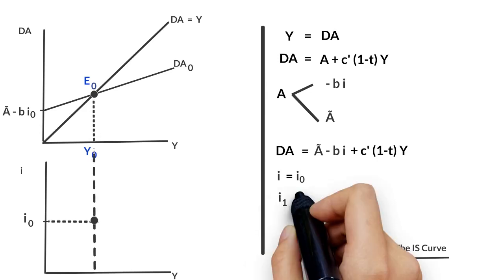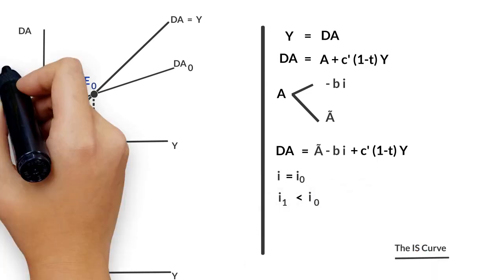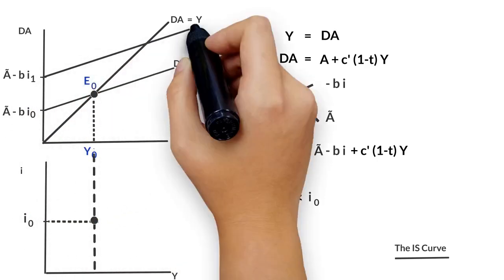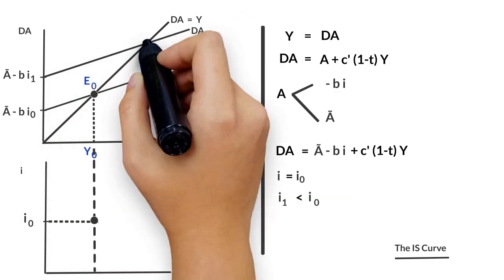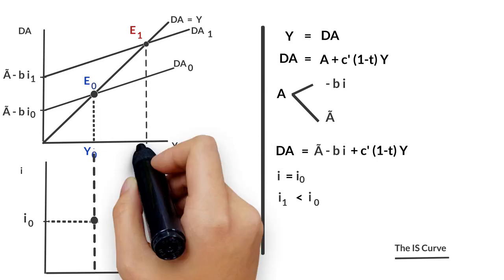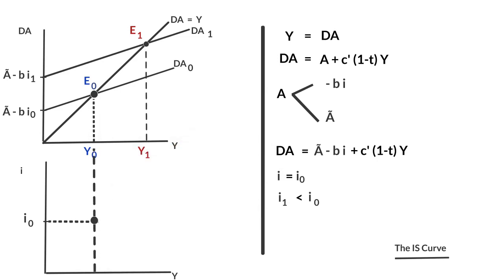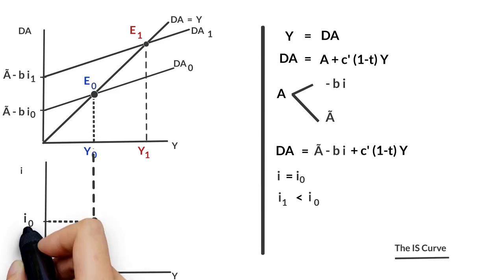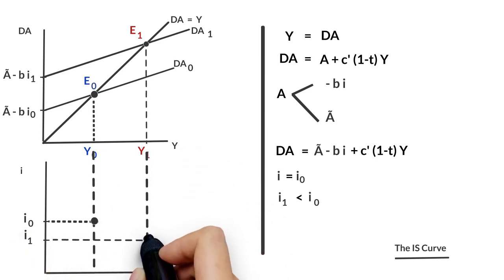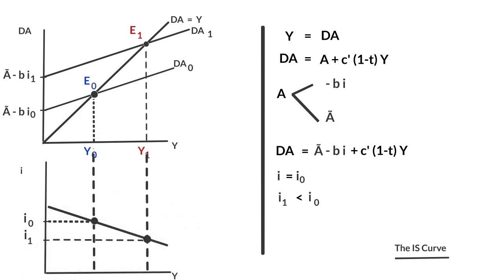If the interest rate is reduced to I sub one, which is lower than I sub zero, we obtain a new aggregate demand curve sub one located above the previous one. We reach the new equilibrium point E sub one for an income level Y sub one. In the interest rate–income graph, the lower interest rate I₁ leads to a higher income level Y₁. Joining the two equilibrium points, we graphically obtain the IS Curve.